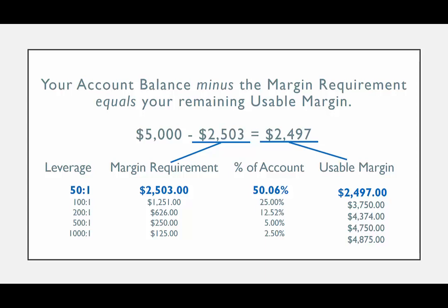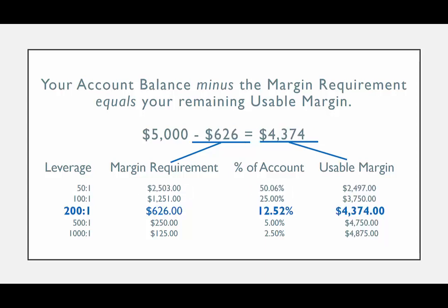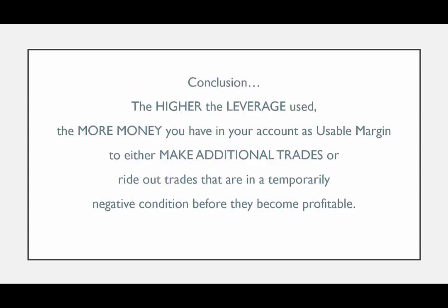In this example, if you have a $5,000 account balance and you make a one lot EURUSD trade using a leverage of 50 to 1, your remaining usable margin is only $2,497. But if you are using a leverage of 200 to 1 on that same trade and the margin requirement has only been $626, you will have a remaining usable margin of $4,374.